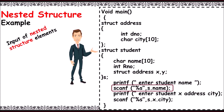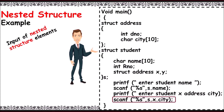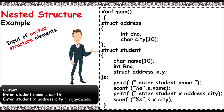Next, for entering the student's address city, we write it as 's.x.ct' to read the string. The output shows the student name and student x's address city. In the next video, let's learn unions.